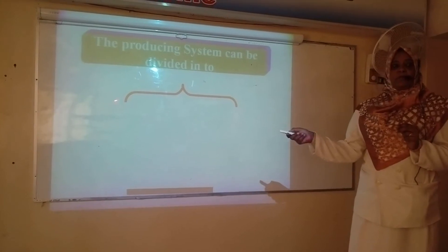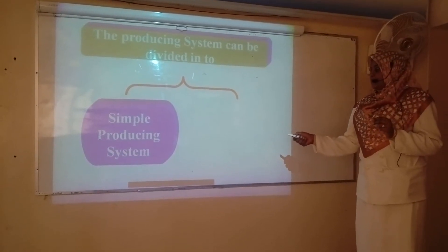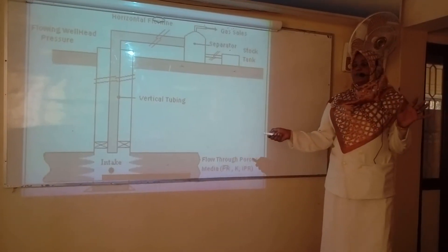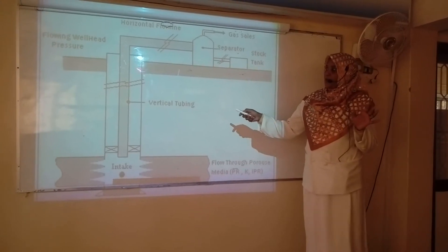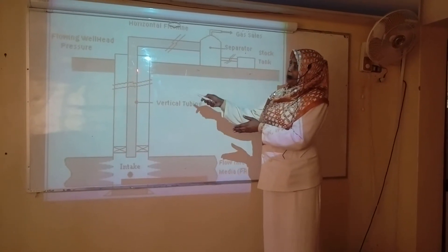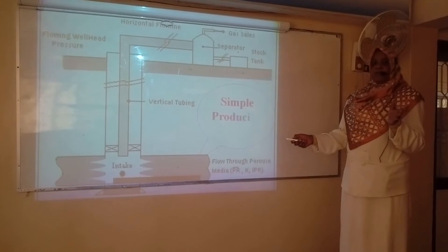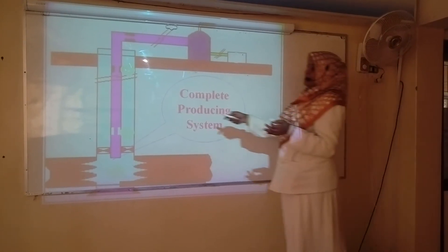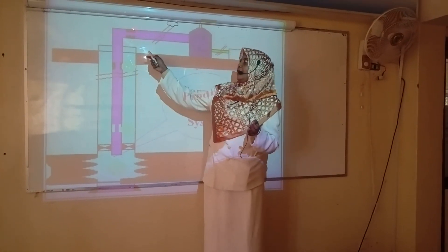Any producing system can be subdivided into two categories. The first category is a simple producing system, and the other category is a complete or complicated producing system. A simple producing system, as can be shown in the figures, is a producing system without any restrictions inside the tubing or the flow line — the fluid will move in the pipes without any restrictions. In the ideal case we call it a simple producing system. The complete or complicated producing system has some restrictions inside the tube and inside the flow line.